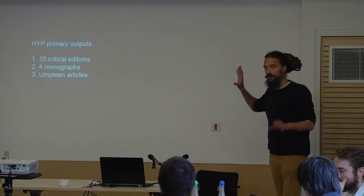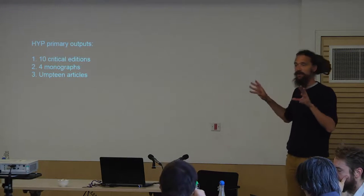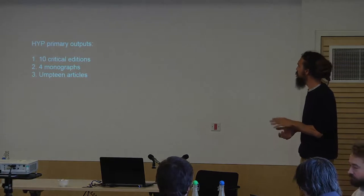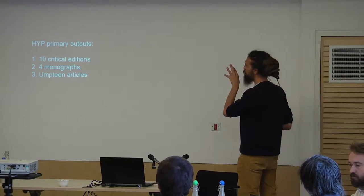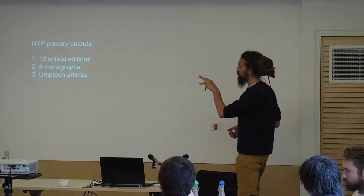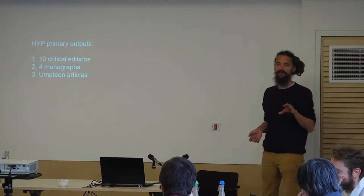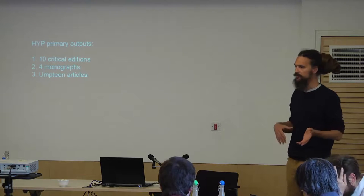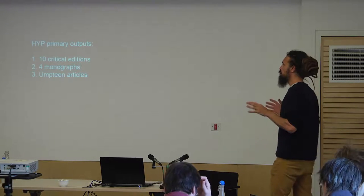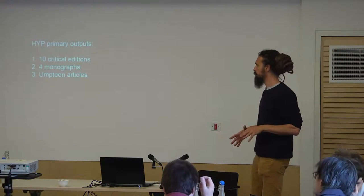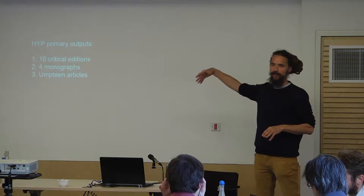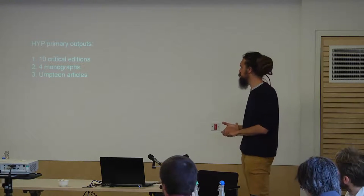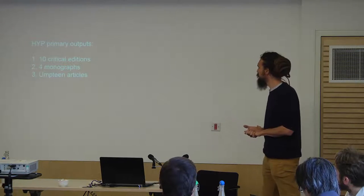The project is really quite simple. We've got primary outputs: 10 critical editions of Sanskrit texts on yoga, ranging from about the 11th century to the 19th century, four monographs, and probably about 20 journal articles we're going to be producing by the end of it.